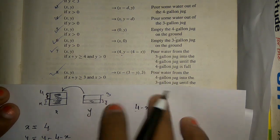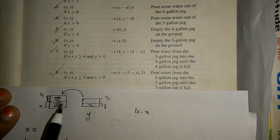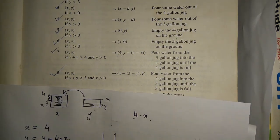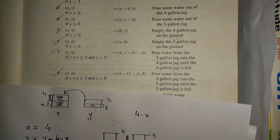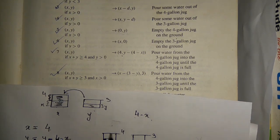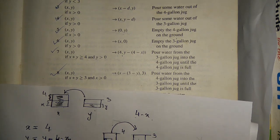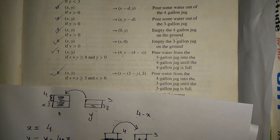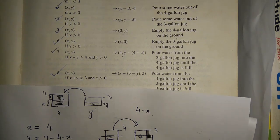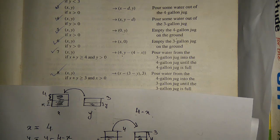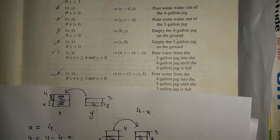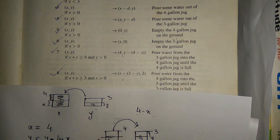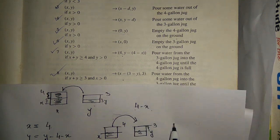The next rule is for the 3-gallon jug: if x plus y is greater than or equal to 3 and x is greater than 0, we pour water from the 4-gallon jug into the 3-gallon jug until it's full. The amount poured is 3 minus y, so the leftover in the 4-gallon jug is x minus (3 minus y). The new state is x becomes x minus (3 minus y) and y becomes 3 (full).